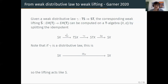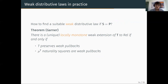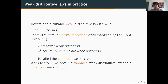The question is the same as before: how do we find a suitable weak distributive law when one monad is the power set monad? We can still use Barr's result. Garner proved in his paper this year that there is a unique locally monotone weak extension of monad T to the category of relations if and only if T preserves weak pullbacks and the naturality squares of mu, the multiplication, are weak pullbacks — same as before, but the condition on the unit is dropped. This unique locally monotone weak extension is called the canonical weak extension, and by the weak trinity we obtain a canonical weak distributive law and a canonical weak lifting.